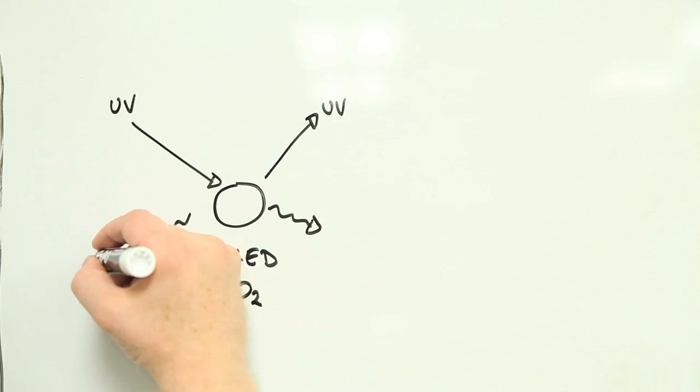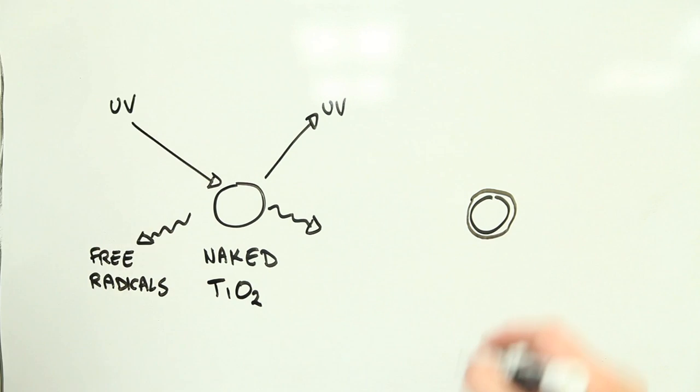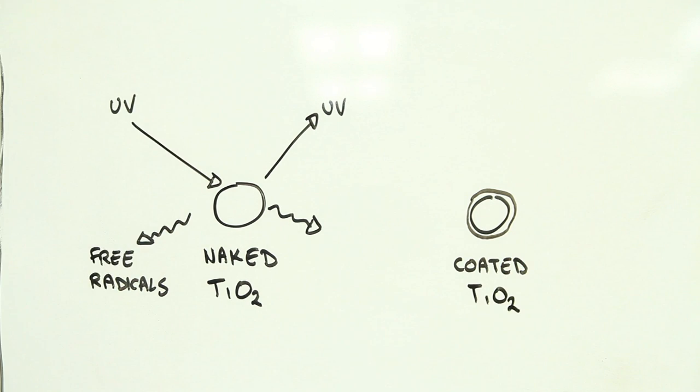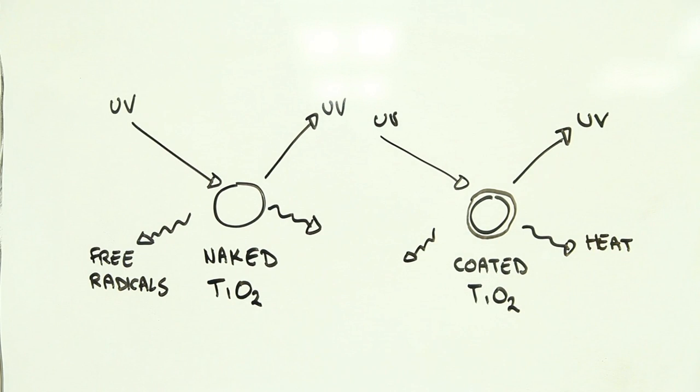Number three: uncoated nanoparticles of titanium dioxide and zinc oxide can produce harmful chemicals called free radicals when exposed to sunlight. To avoid this, sunscreen manufacturers coat them with a thin layer of materials like silica or alumina. The layer prevents free radical formation and transforms potentially harmful particles into safe ones.